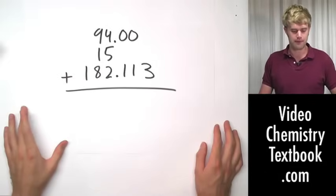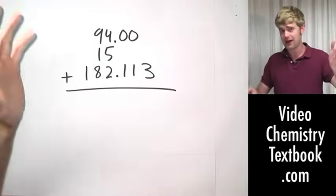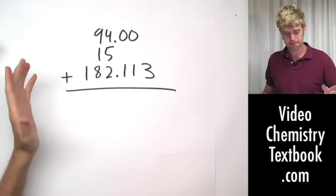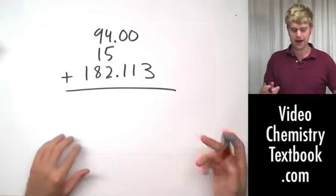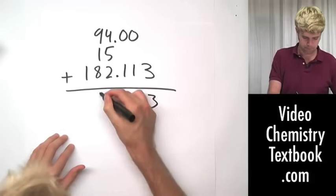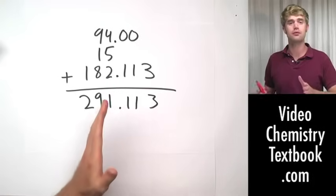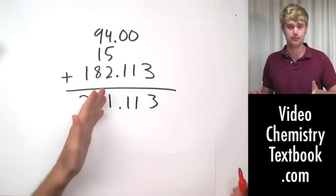Now it doesn't matter if we're adding more than one number. The rules are the same. Here I'm adding three, but I could be adding five or seven or ten. The first thing that I do is the math and the next thing that I do is look at the number of decimal places in each of the numbers I added together.